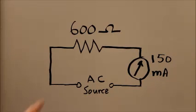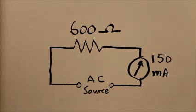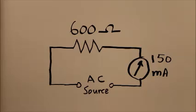Suppose that a certain load constitutes a pure resistance of 600 ohms. We have an AC source, an alternating current source connected to this load, like a generator for example, or the utility power source, or some other AC source.